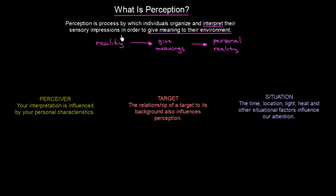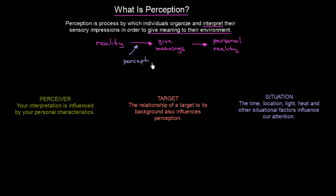Where do perceptions take place in this little chain? Well, we see the reality with some sensory impressions — we see, or hear, or smell — and then we give meanings to them. So right over here are our perceptions.